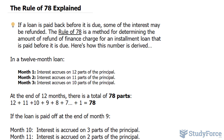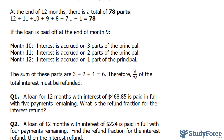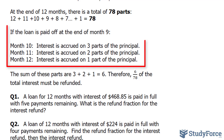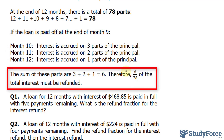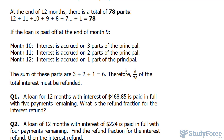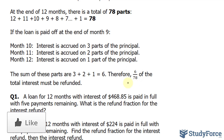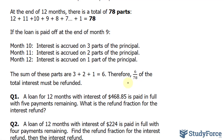So let's say that you have a loan and it's paid off at the end of the 9th month. Month 10 the interest accrued is 3 parts, the 11th month is 2, and the last one is 1 part. If you add that up, you end up with 6, divided by 78, which gives you the ratio of the total interest that must be refunded — 6 over 78 parts. This is a very small fraction, and this is the reason why the amount you get back for paying it off quickly isn't always as much as you would want.